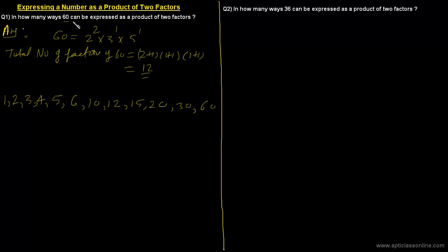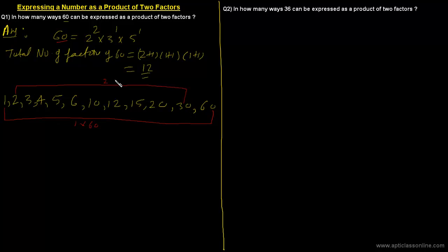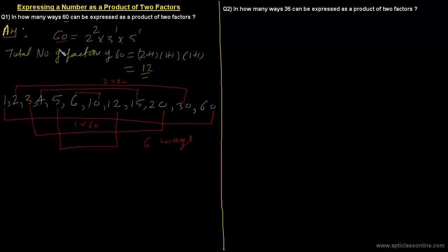The question is: in how many ways can 60 be expressed as a product of two factors? Out of these 12 factors, we pair them: 1×60 is one way, 2×30 is the second way, 3×20 is the third way, 4×15 is the fourth way, 5×12 is the fifth way, and 6×10 is the sixth way. So there are 6 ways.